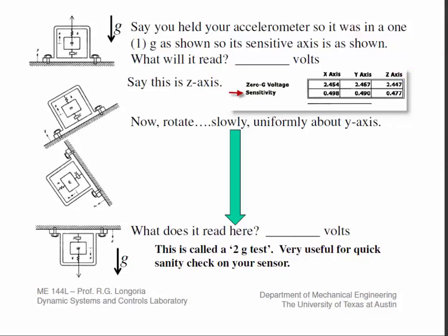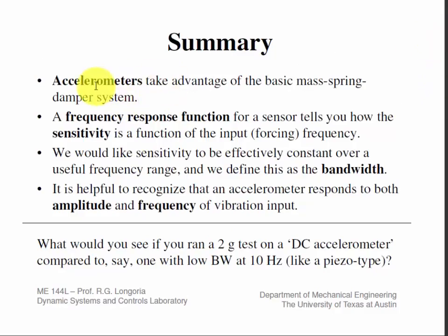In summary, accelerometers take advantage of basic mass-spring-damper systems, so they have a dynamic response. They're sensitive across frequency, and that tells us how the sensitivity depends on input forcing frequency, which defines the bandwidth. It's helpful to recognize that accelerometers are responsive to both the amplitude level of vibration in g's and to the particular frequency at which it's being excited.